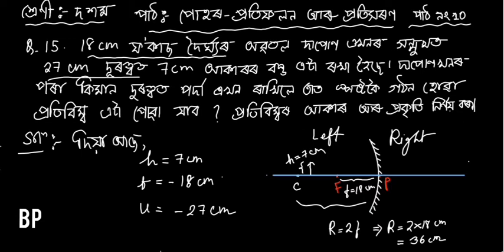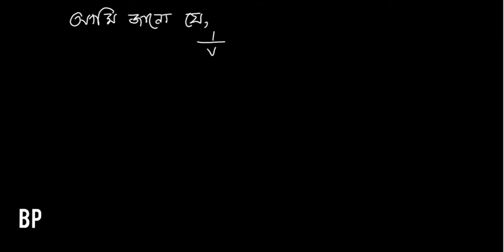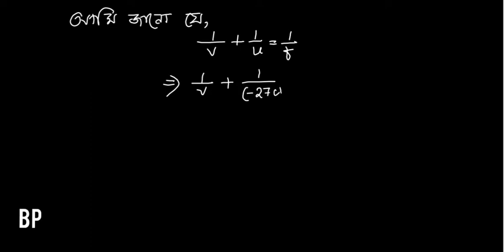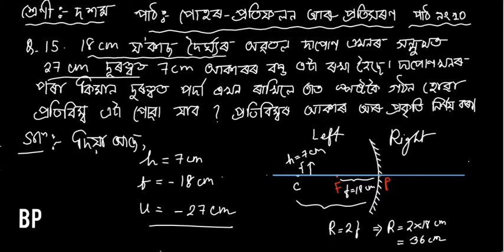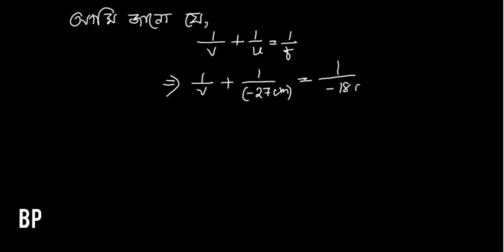We will use 1 by f plus 1 by u, minus y, minus 27cm. I am writing minus 27cm, and 1 by f. So I am writing minus 18cm. I am writing minus 1 by v is equal to minus 1 by 27, minus 1 by 18cm.